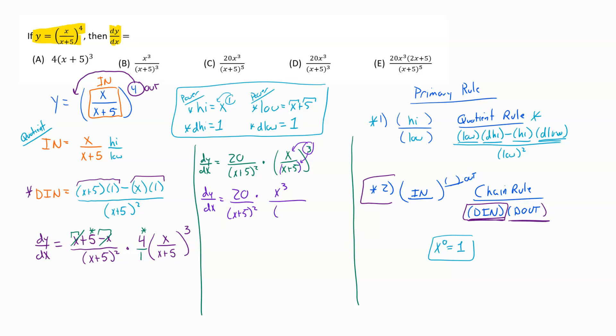On the bottom I still have this x plus 5 squared. And over here this is a quantity, so that whole quantity, x plus 5, is going to be raised to the third. And now I'm just going to multiply my two fractions together. I multiply the top with the top and the bottom with the bottom. So I get dy dx equals 20x to the third on top. And on the bottom I have like bases: x plus 5 to the second and x plus 5 to the third.